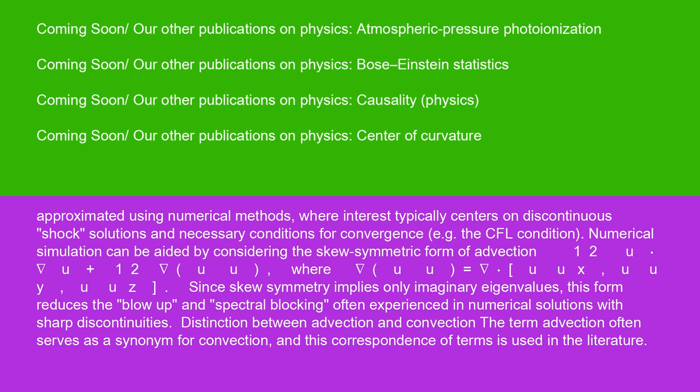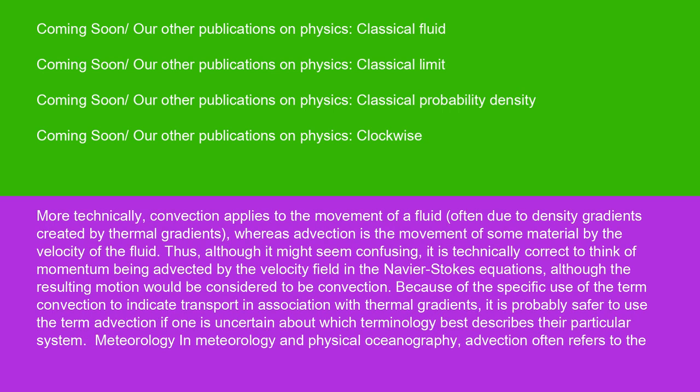Distinction between advection and convection: the term advection often serves as a synonym for convection, and this correspondence of terms is used in the literature. More technically, convection applies to the movement of a fluid, often due to density gradients created by thermal gradients, whereas advection is the movement of some material by the velocity of the fluid. Thus, although it might seem confusing, it is technically correct to think of momentum being advected by the velocity field in the Navier-Stokes equations, although the resulting motion would be considered to be convection. Because of the specific use of the term convection to indicate transport in association with thermal gradients, it is probably safer to use the term advection if one is uncertain about which terminology best describes their particular system.